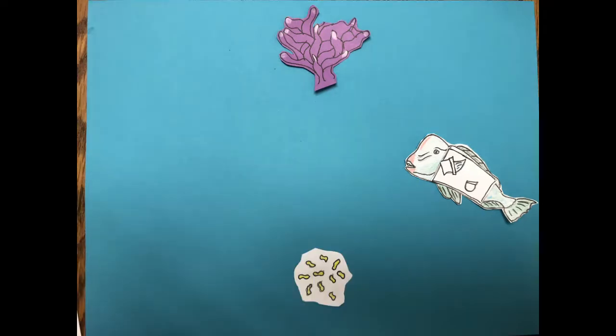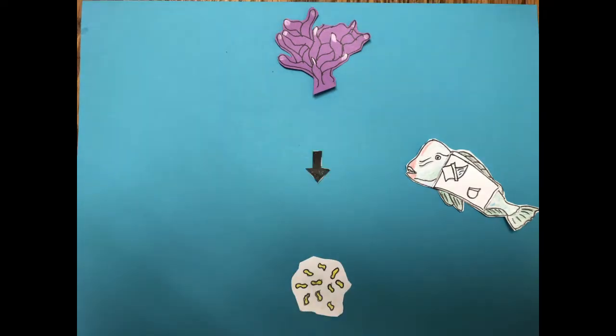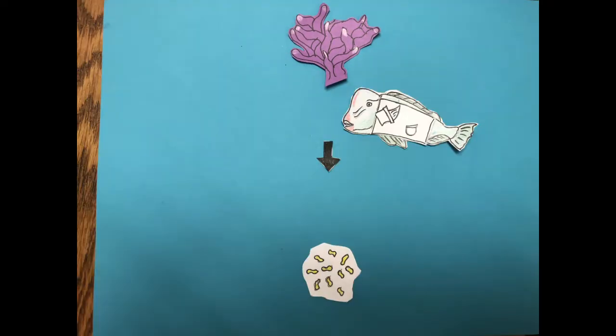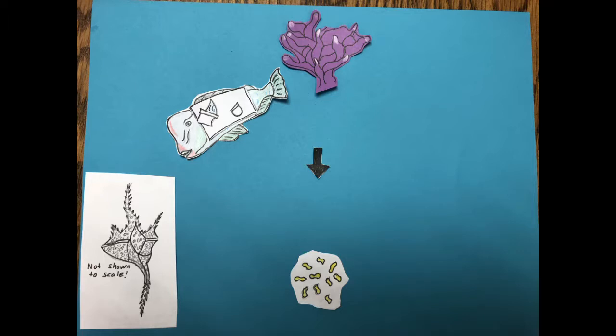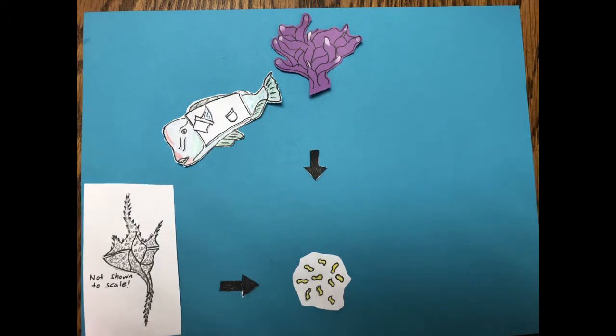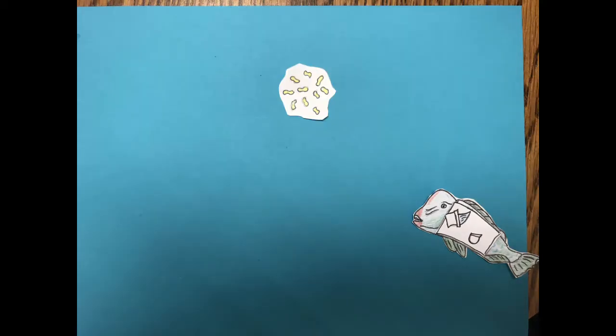Back to the topic at hand. Brooding planulae already have zooxanthellae within them, which was passed on to them from their parents, in a process called vertical transmission. Spawning planulae, on the other hand, do not get zooxanthellae passed on to them and gain their zooxanthellae from the water column. This is known as horizontal transmission. Once zooxanthellae are obtained, coral can begin looking for a place to settle.